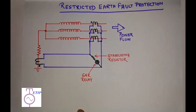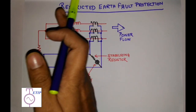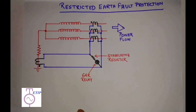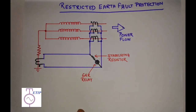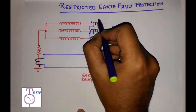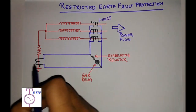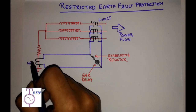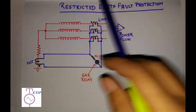The power is flowing from left hand side to right hand side. To execute a successful restricted earth fault protection you need four CTs. Three of these are called line CTs, and the fourth one is called the neutral CT or N-CT.